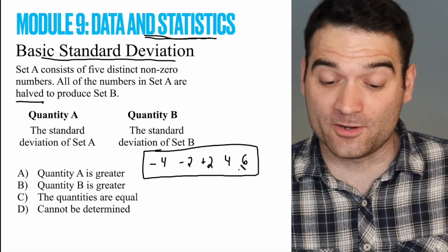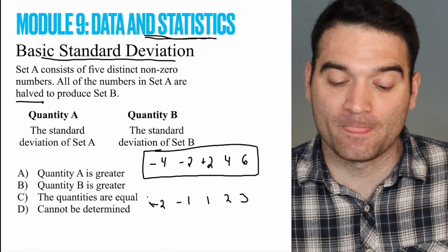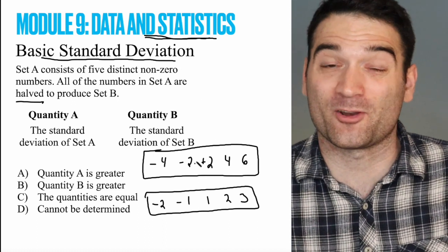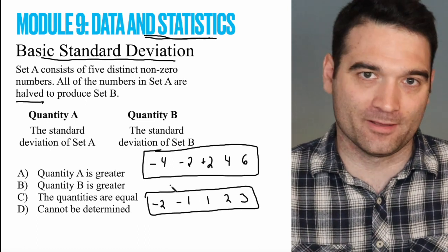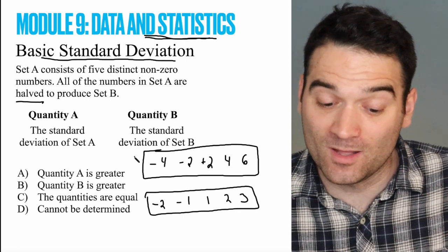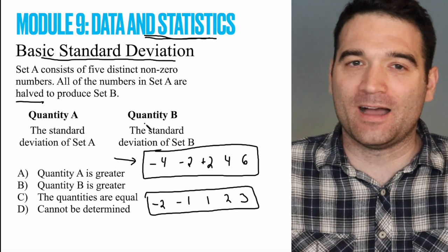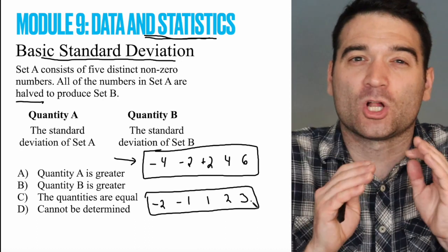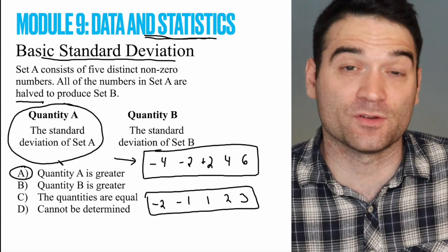Set B is everything here divided by 2. So that's going to be negative 2, negative 1, 1, 2, and 3. Now let's compare these two lists to each other. And if you want to, a good trick here would be to draw these out on number lines. If I draw all these numbers out on a number line and I draw all these numbers out on a different number line, which one is going to be more far flung? That is, which one is going to be more spread out? Well, clearly this one, right? Clearly the first one. By cutting in half all the numbers, I've kind of sucked them into the middle. So negative 2, negative 1, 1, 2, and 3 are much more closely clustered than these ones are. So the correct answer here is quantity A. The standard deviation of the first set is greater.